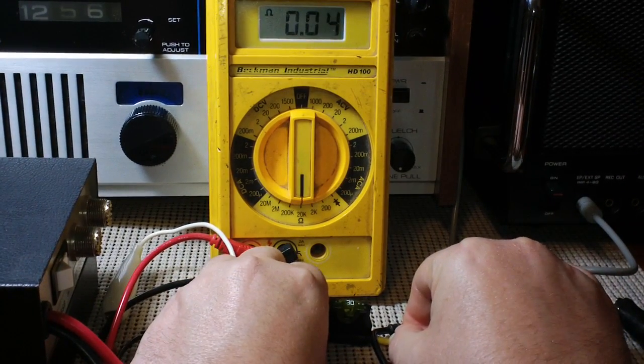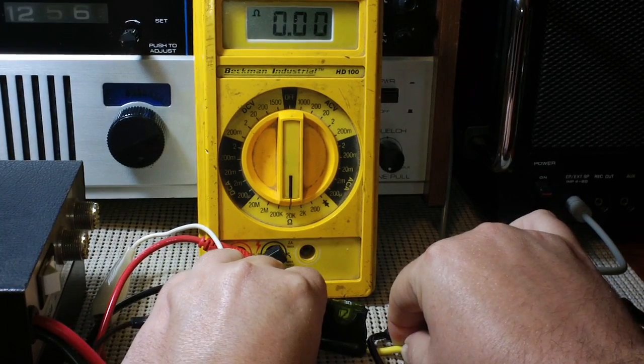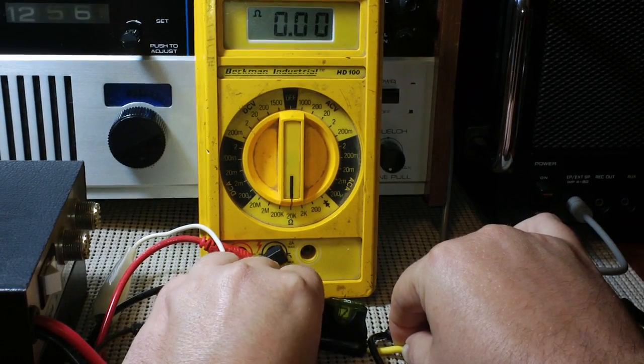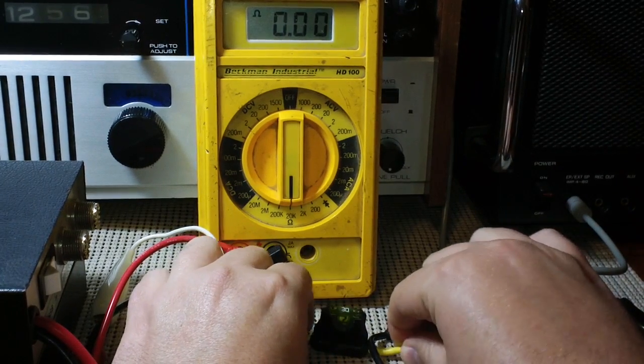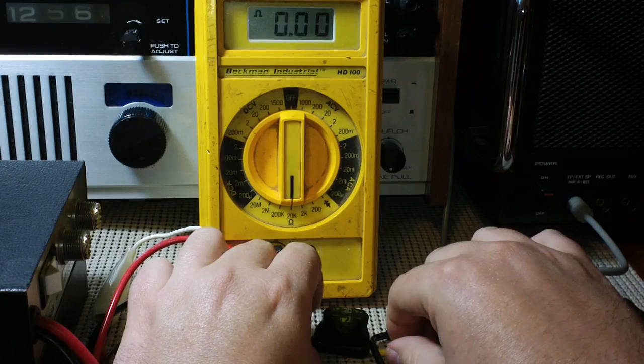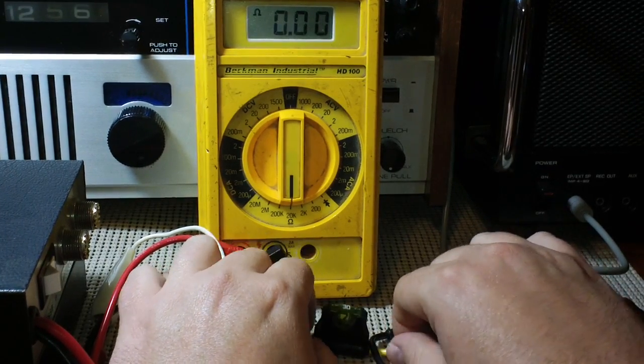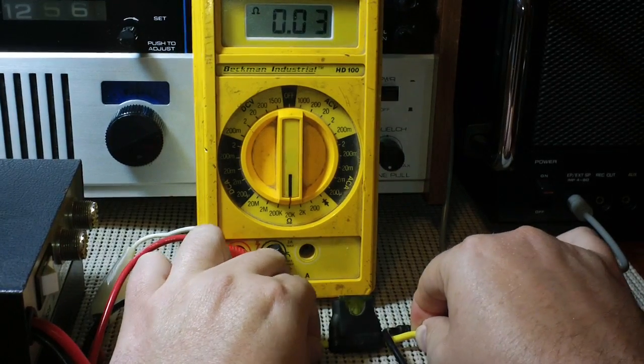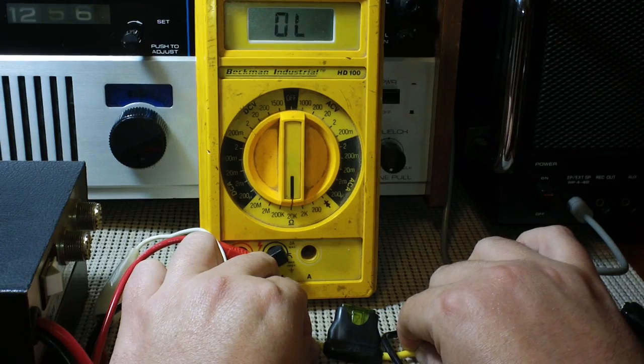Sometimes I can bend it just right. So that's full continuity, but most of the time, notice I'm bouncing around with different numbered readings. Most of the time, it doesn't have full continuity, has to be just right to have it. As I bend that, readings are all over the place and then lost continuity altogether.